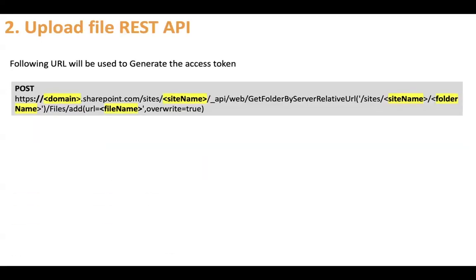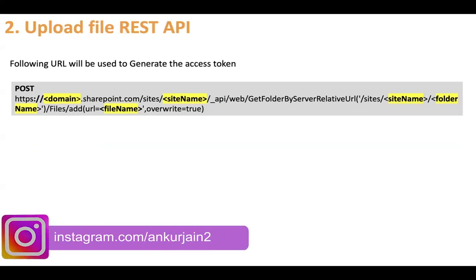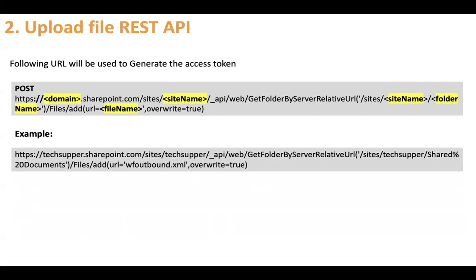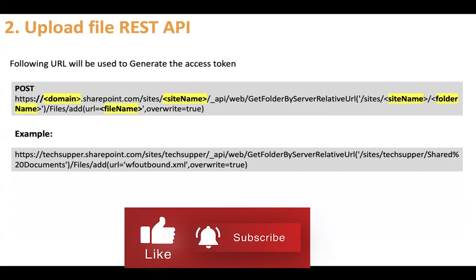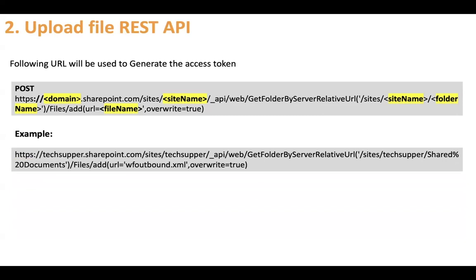The URL to upload the file would be: domain.sharepoint.com/sites/{siteName}/_api/web/getfolderbyserverrelativeurl('/sites/{siteName}/{folderName}')/files/add?url={fileName}&overwrite=true. The example would be: taxsupport.sharepoint.com/sites/taxsupport/shared documents — shared documents is the folder where we are uploading the files — then /files/add, then url equals to the file name and overwrite equals to true.